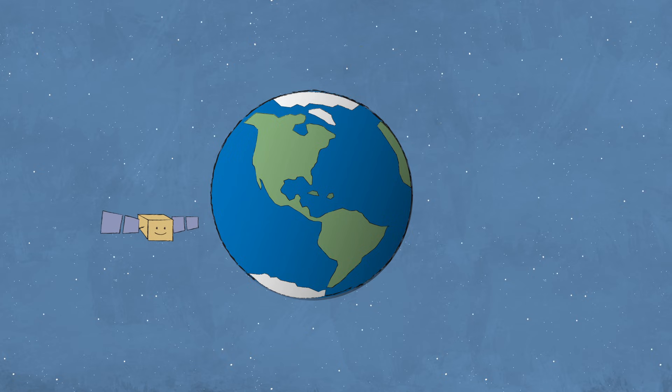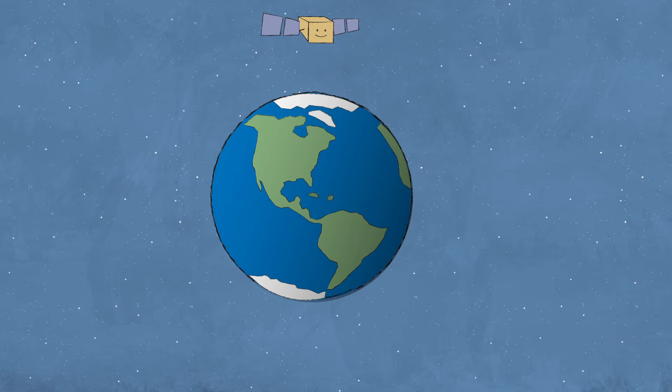But how does the satellite stay in orbit? Wouldn't it just fly off in a straight line out into space? Not quite.